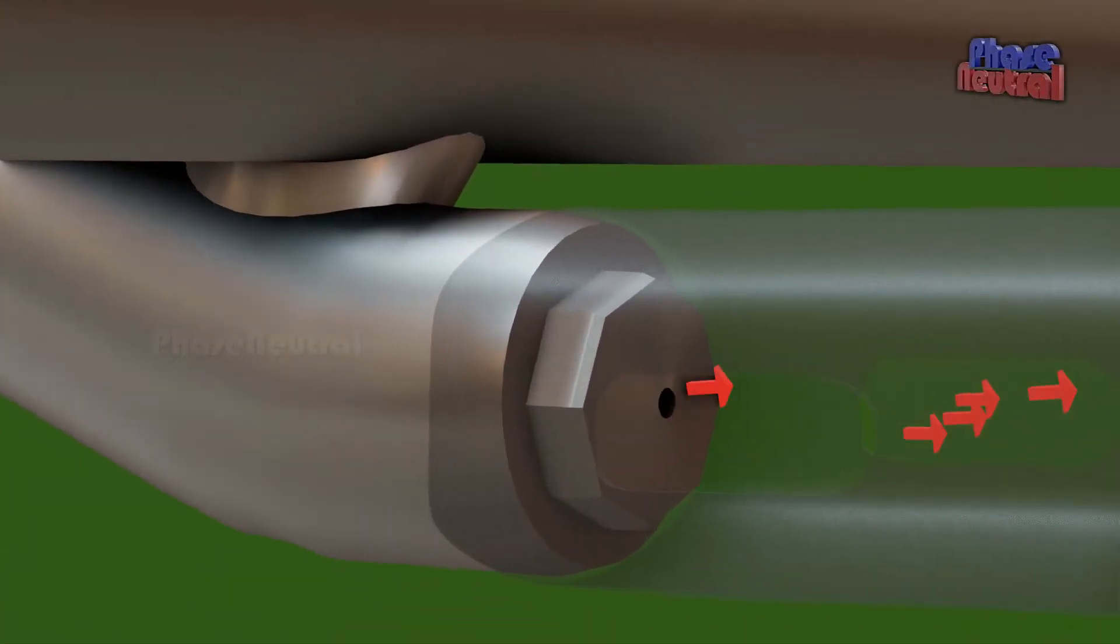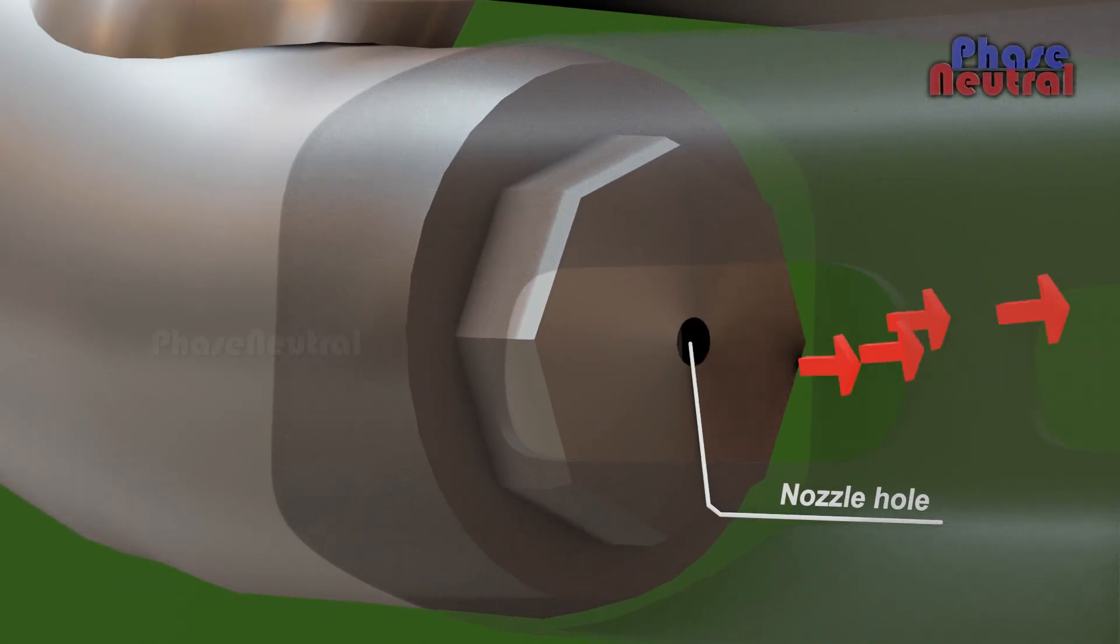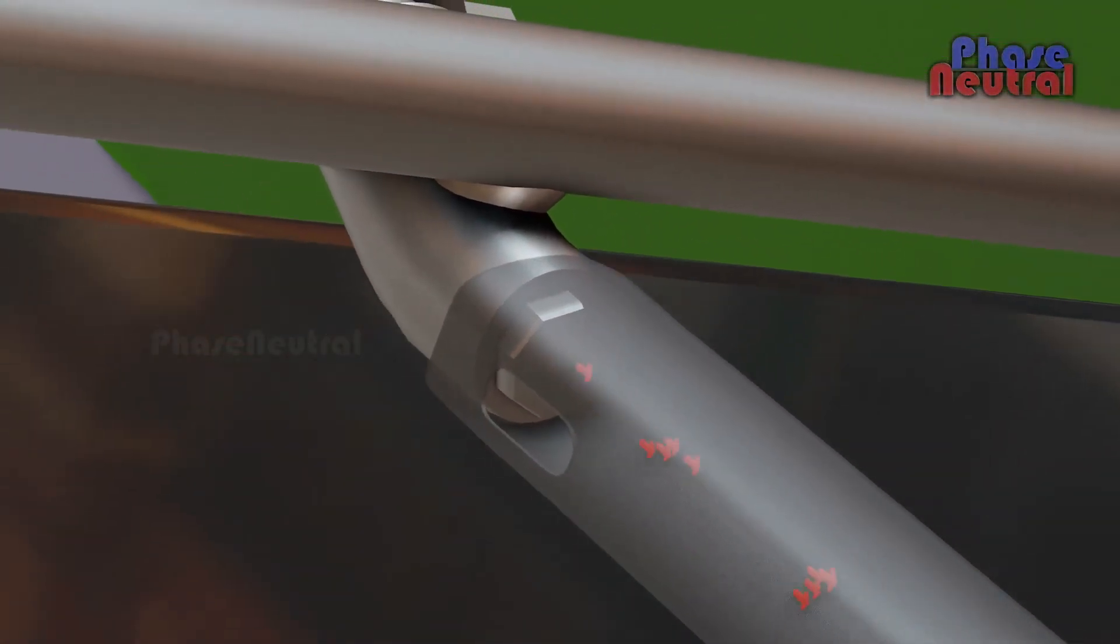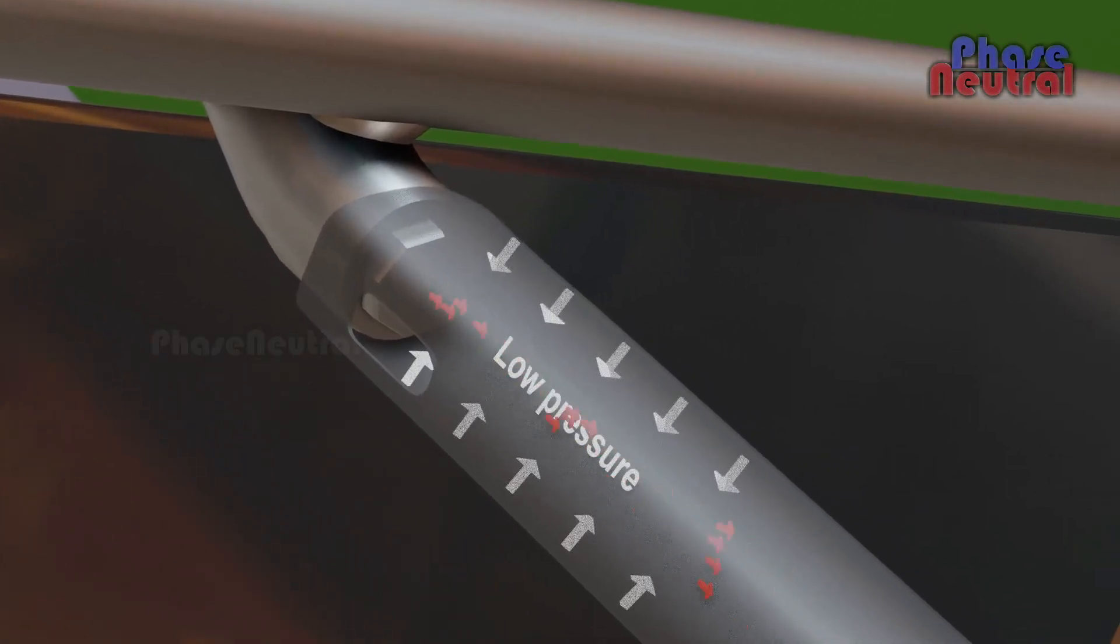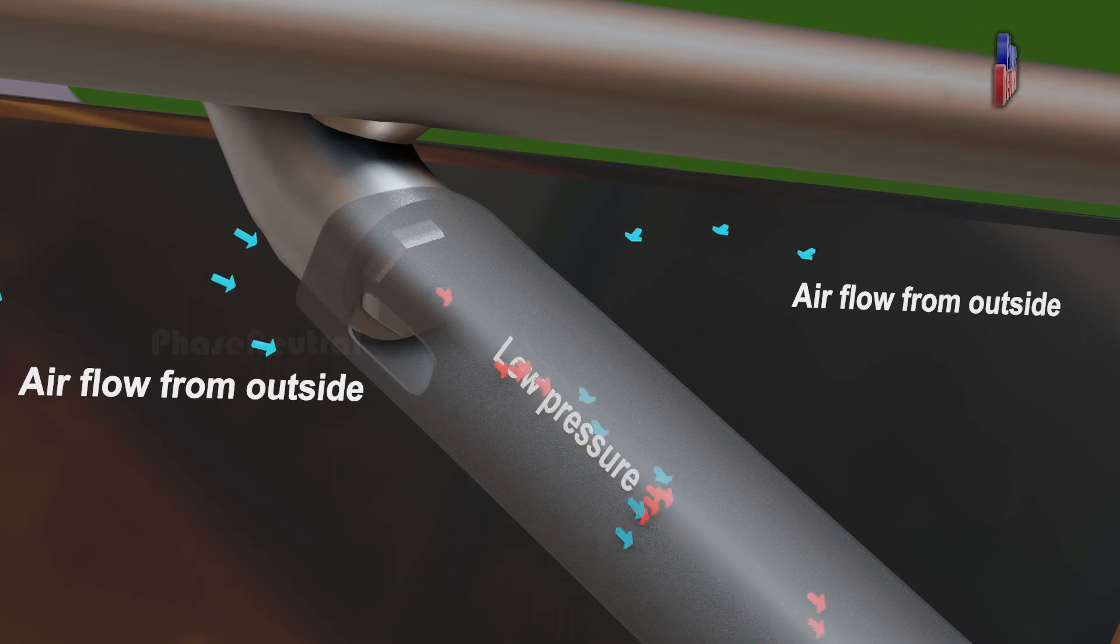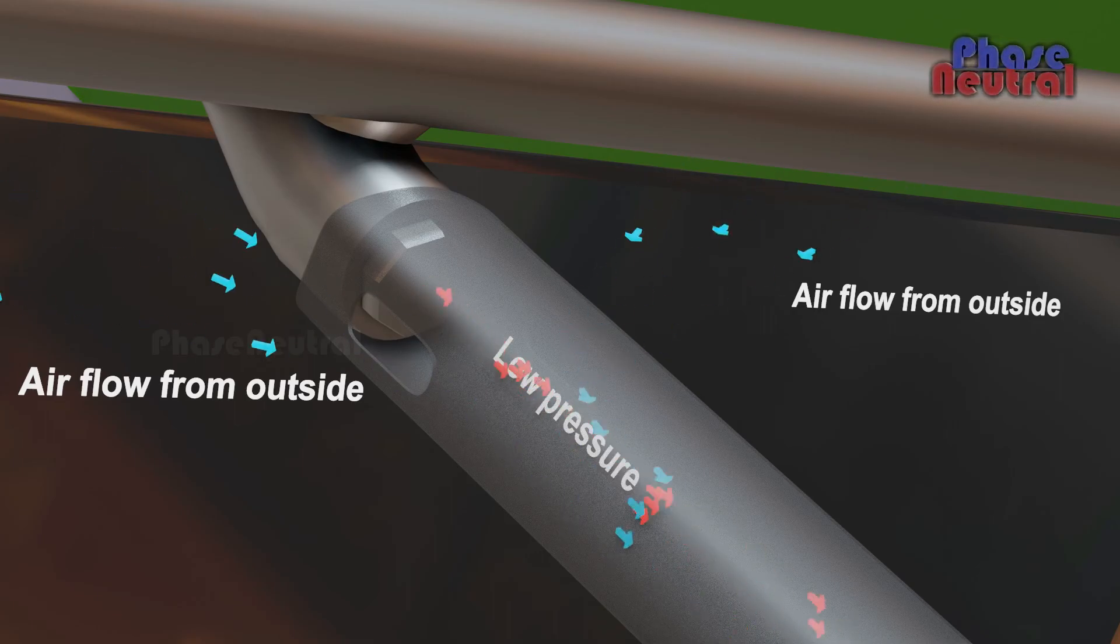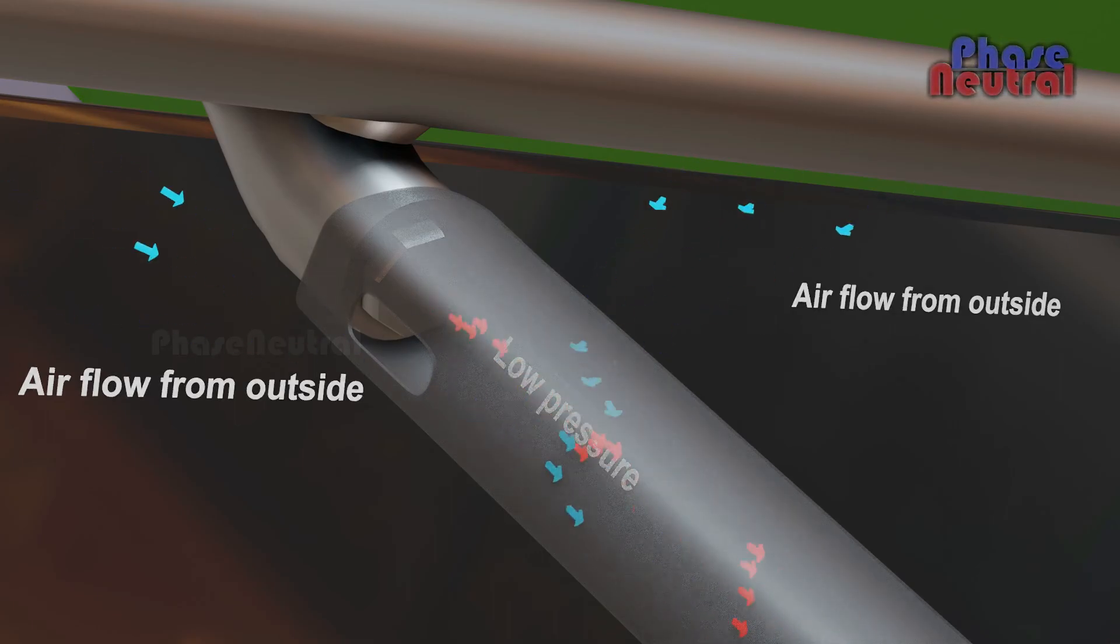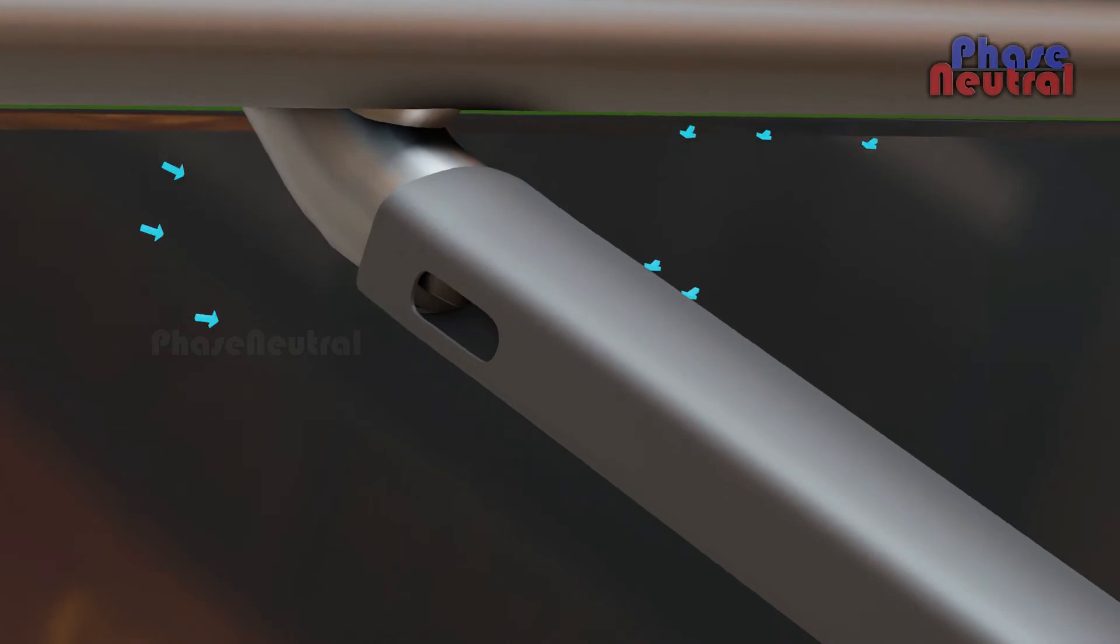The nozzle hole size is important here. When gas flows out through this small hole with high pressure, its velocity increases. Because of this high velocity, its static pressure decreases. Air always flows from high pressure areas to low pressure areas. So outside air keeps flowing inside and mixes with gas until the gas flow stops. Because of this air movement, gas never leaks out through those holes.